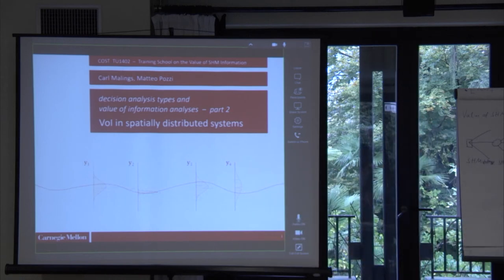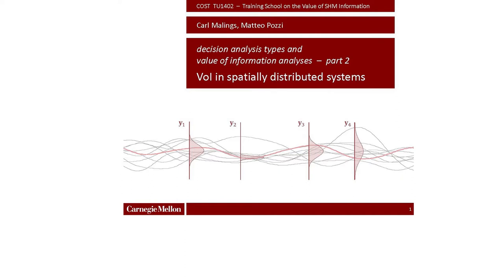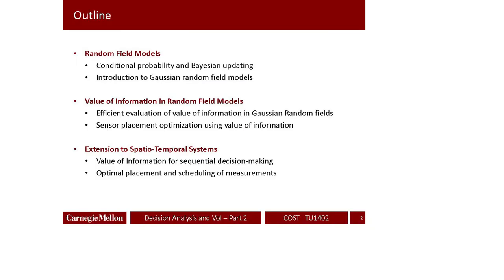Hello everyone. It's my pleasure to give this lecture. We will present research related to value of information for spatially distributed systems. I will give the first half hour, which is essentially a recap of general background on spatially distributed systems and a bit on value of information. Carl will then cover deeper research topics. I'll start with a general introduction on Bayesian inference, a probabilistic way of processing data.